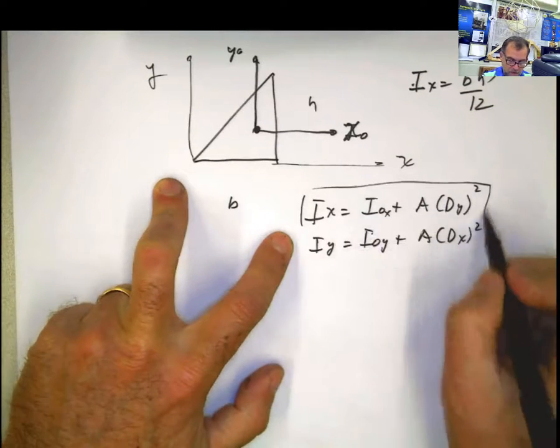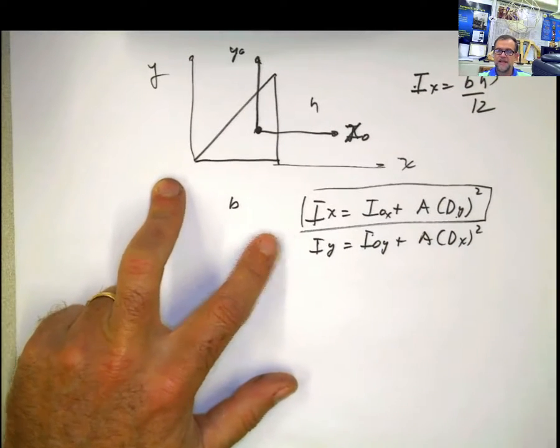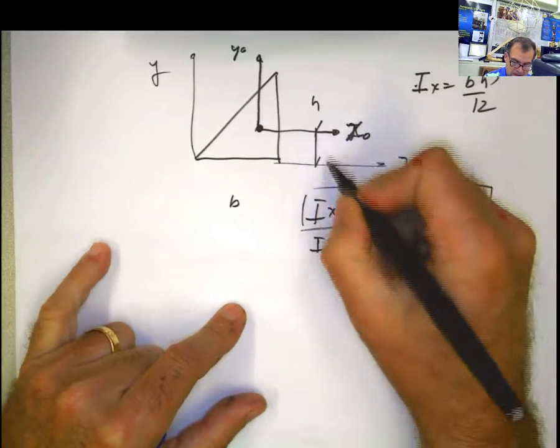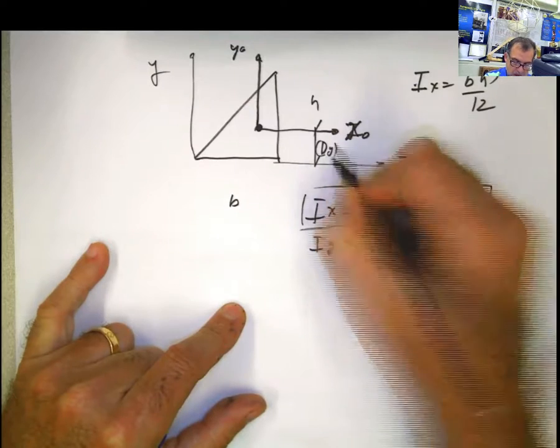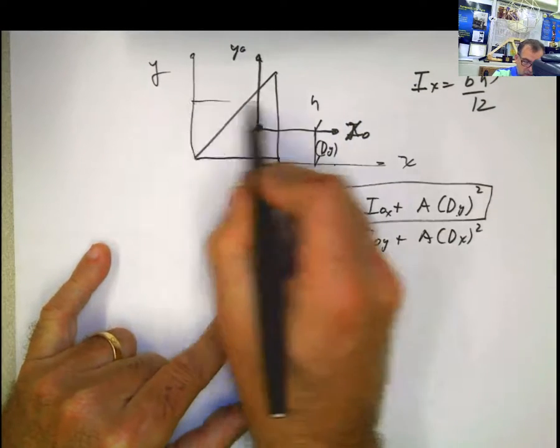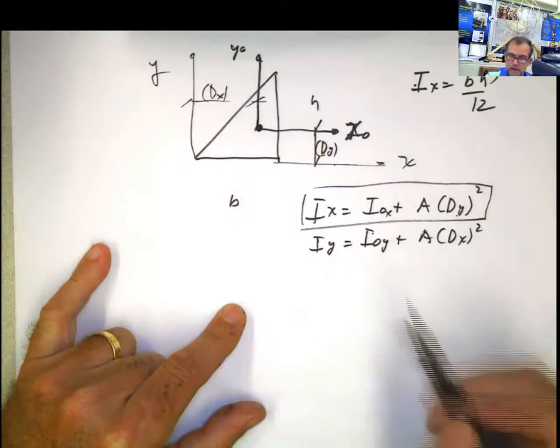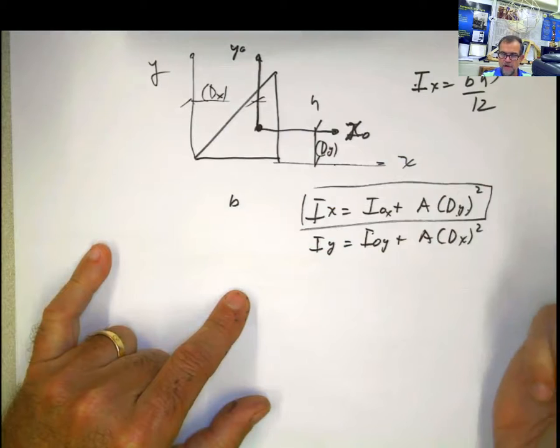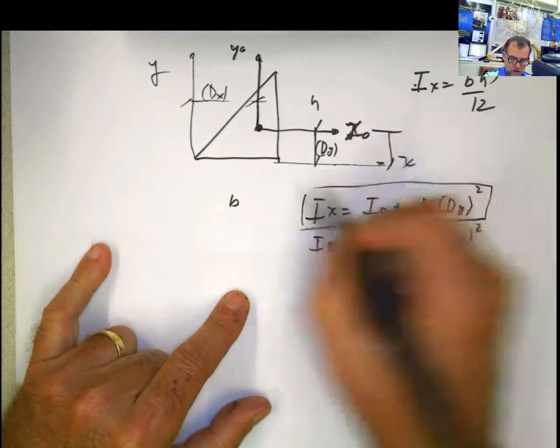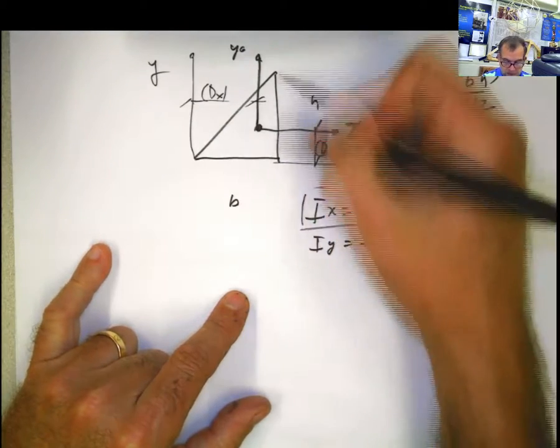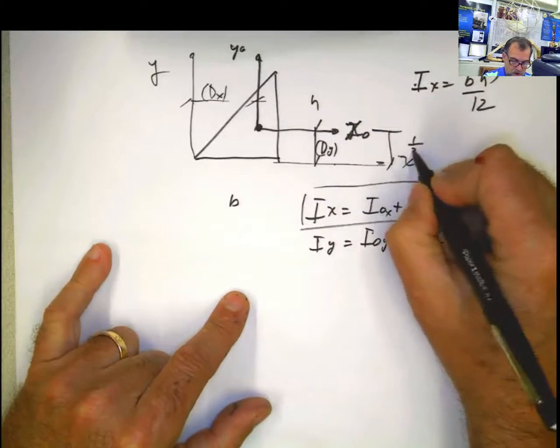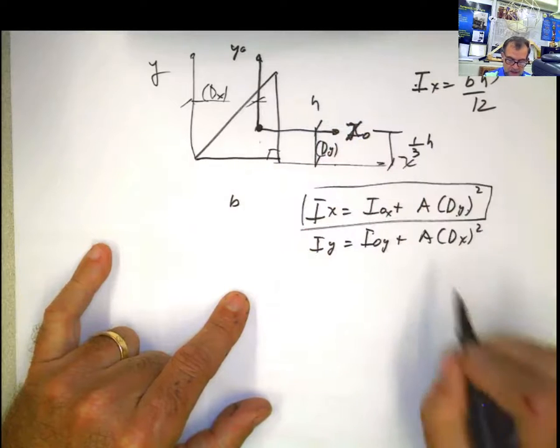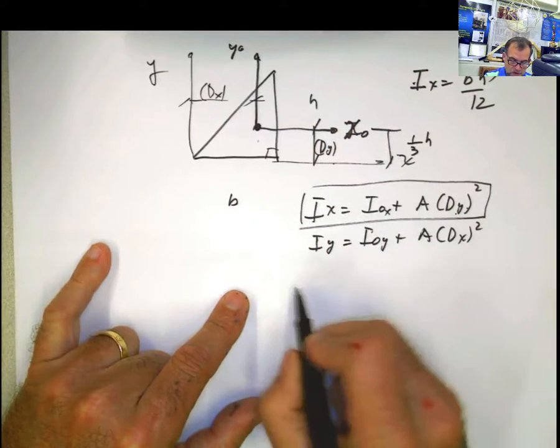The parallel axis theorem says that ix equals i sub 0 plus A times distance in y squared. My distance in y is the distance that separates both axes - my centroidal axis and my x-axis. The centroid of the triangle is located 1 third of the h with respect to the right angle.